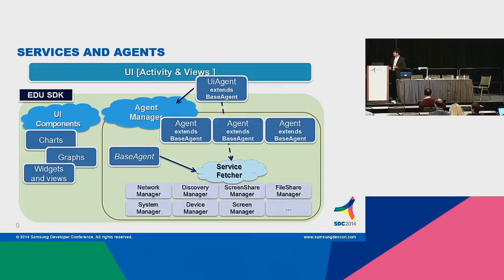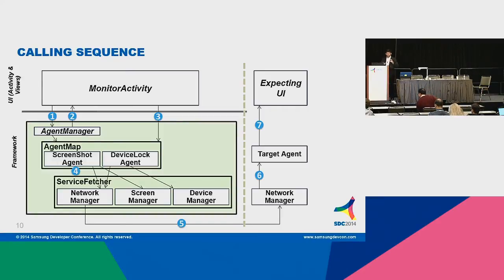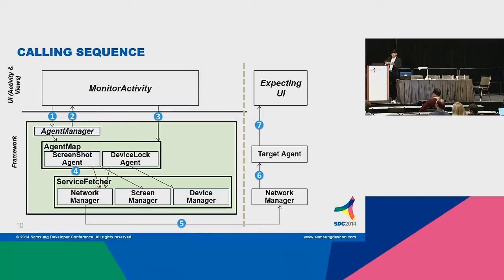The UI component includes charts, graphs, and other parts. Let's see one simple calling sequence — how monitor activity works. If the UI wants that feature, it needs to get the reference of the agent manager. The agent manager has maps — maps have a combination of agents. For monitoring activity, the teacher might need a screenshot agent (already built in) plus a device lock agent to control the device and get screenshots. It's a combination of multiple agents; the mapping is handled by the agent manager.